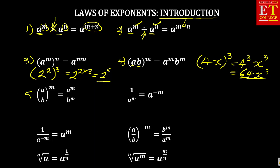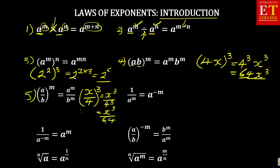Law number 5 says: if what is inside the bracket is a over b, similar to law number 4, the exponent is affecting both a and b. So if I'm having x over 4 to the power of 3, this will mean x cubed over 4 cubed, which is equal to x cubed over 64, like we did previously.